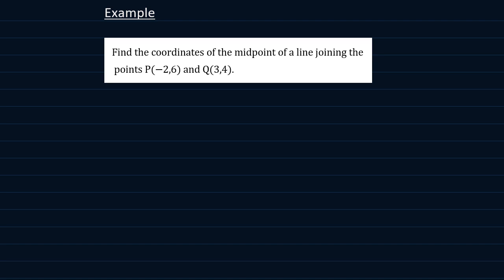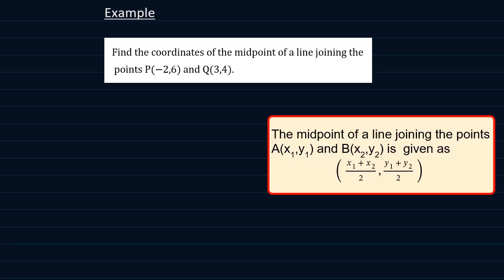We have established that in order to find the midpoint of a line joining two points, you have to add the x-coordinates and divide by 2 and the y-coordinates and divide by 2.